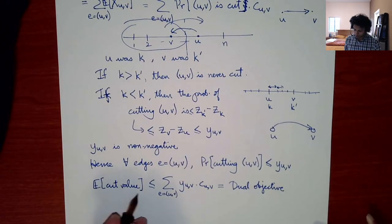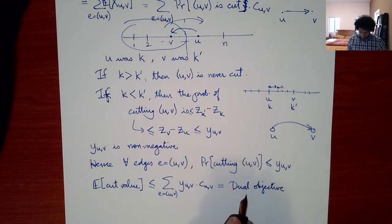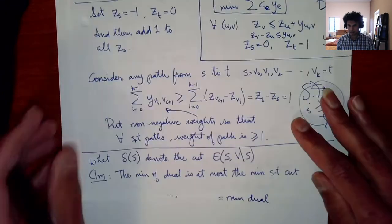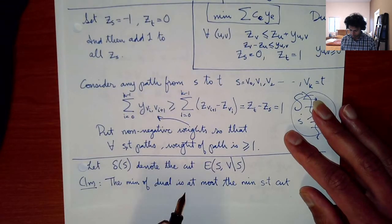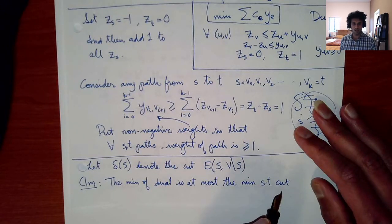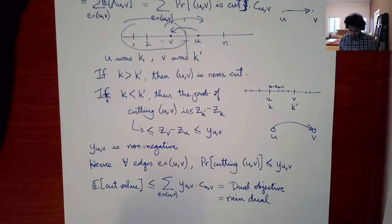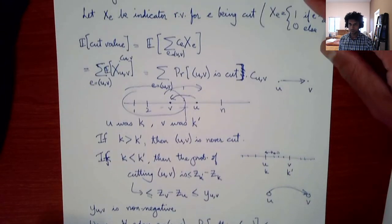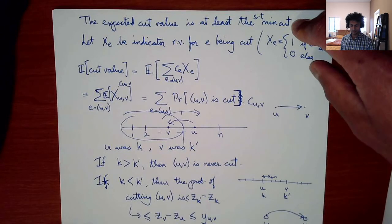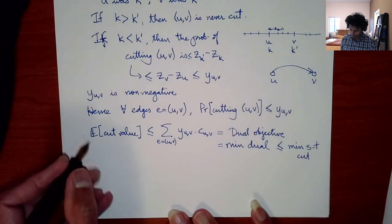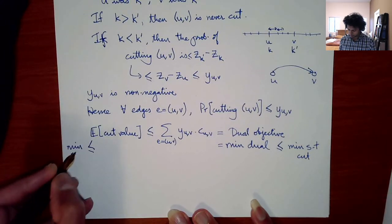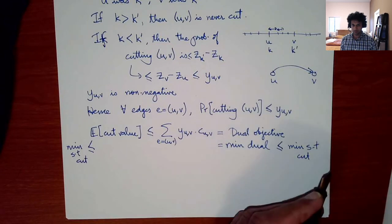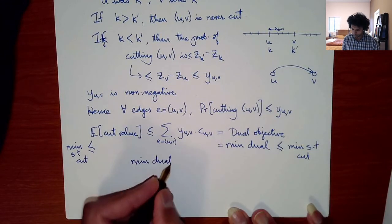So the expected cut value is at most the dual objective, which is the min of the dual. But we already argued that the min of the dual is at most the min ST cut. And we also argued that the expected cut value is at least the min ST cut. Therefore all these quantities are equal.